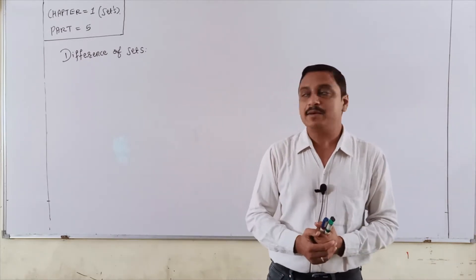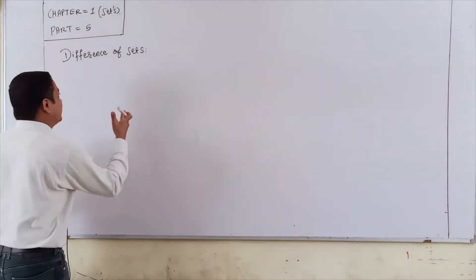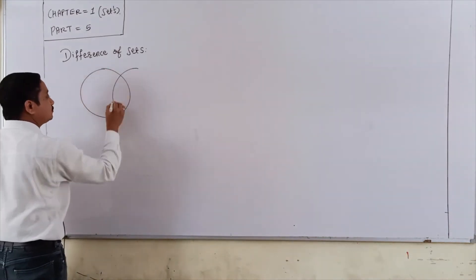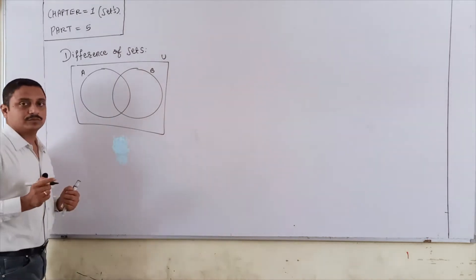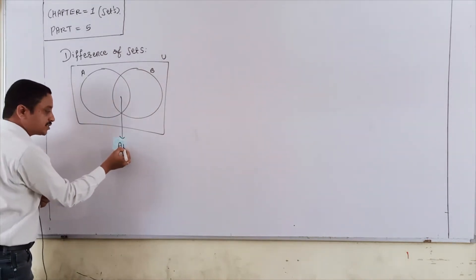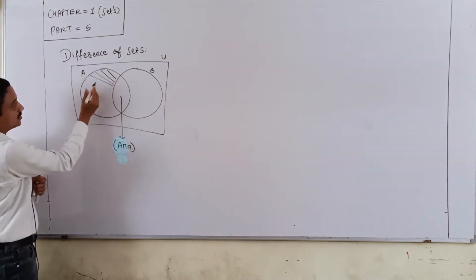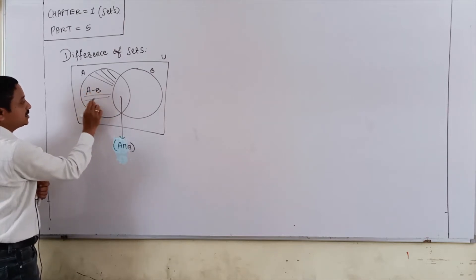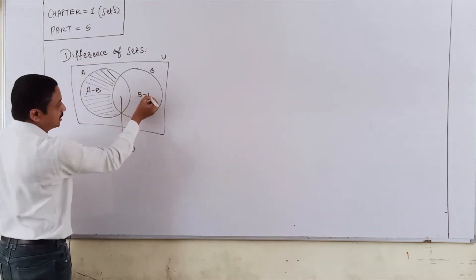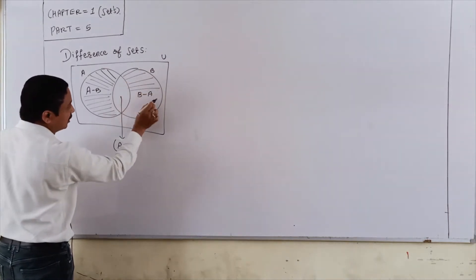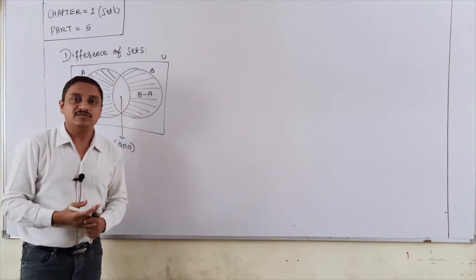So today we go ahead to the same related next part: difference of sets. Difference of a set is nothing but there are two sets A and B. This is indicated as A minus B, and that is our difference of sets. And this here is B minus A. So this should be only particularly B minus A. Now I will explain with a little example.